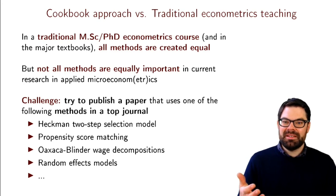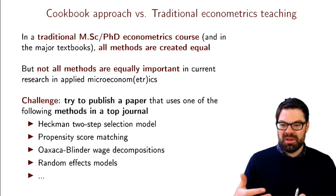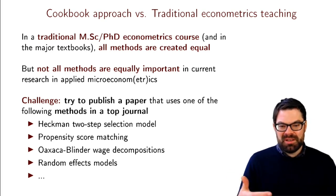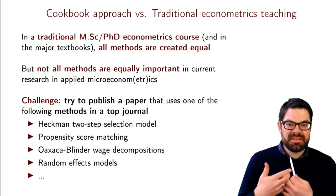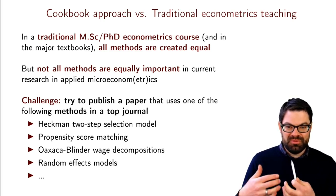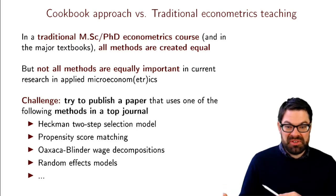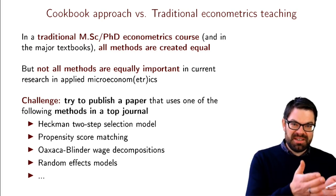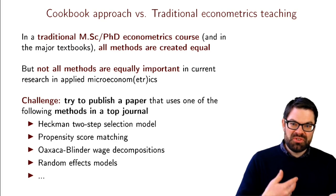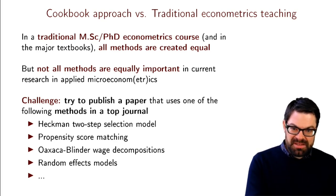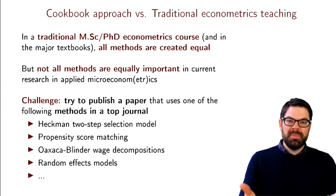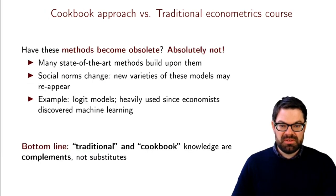For example, try to publish a paper where the main regression is based on propensity score matching, or the Heckman two-step selection model, or wage decompositions. These have their place, but you will not see them much in top journals. I'm not saying you shouldn't learn these — quite the opposite, you actually will learn some of them — but you have to be aware of which techniques allow you to speak to the audience you need to convince in order to succeed in this profession and build your profile as a researcher.